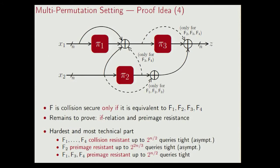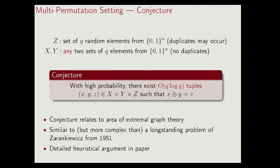A part of the result is based on a conjecture. This is the variant of the conjecture for Q at most 2^(n/2). Suppose you are given a set Z of Q random n-bit elements, and your goal is to find two sets X and Y that maximize the number of tuples x, y, z satisfying x XOR y equals z. The conjecture states that there are at most about Q log Q such tuples, except with very small probability. This conjecture is highly related to the area of extremal graph theory, and it turns out to show some similarities with a conjecture from 1951. In the full version of the paper, I give a detailed heuristic why this conjecture is likely to hold.